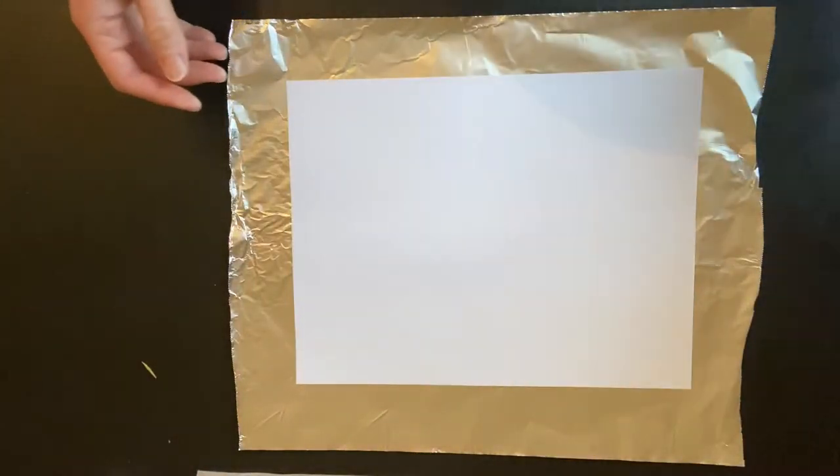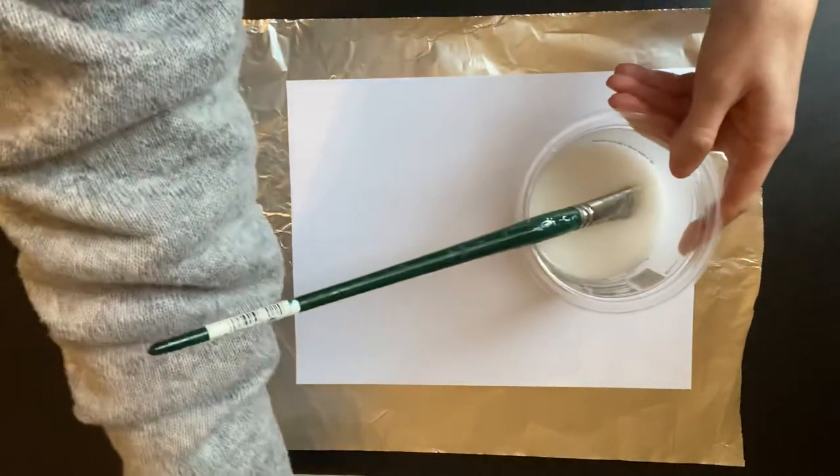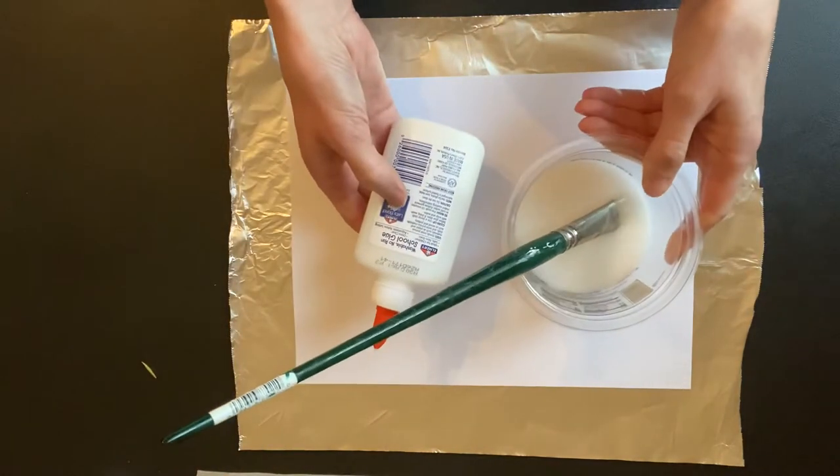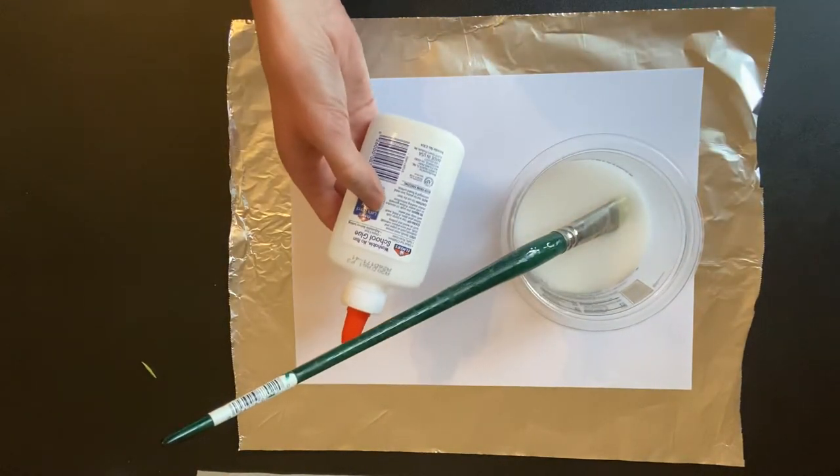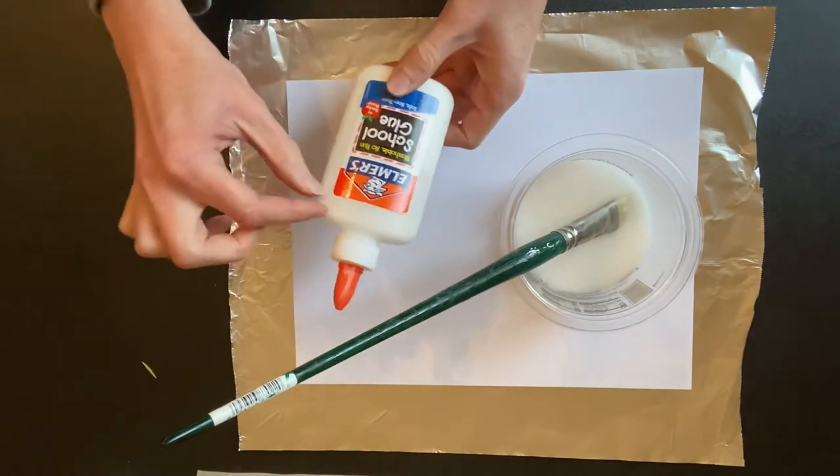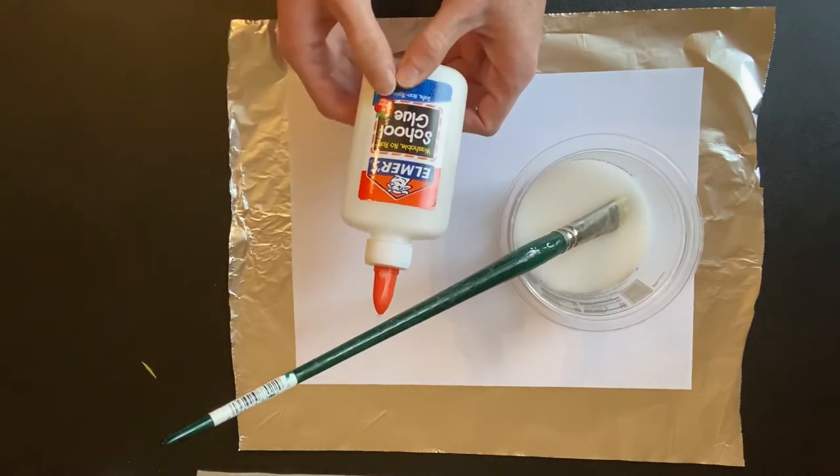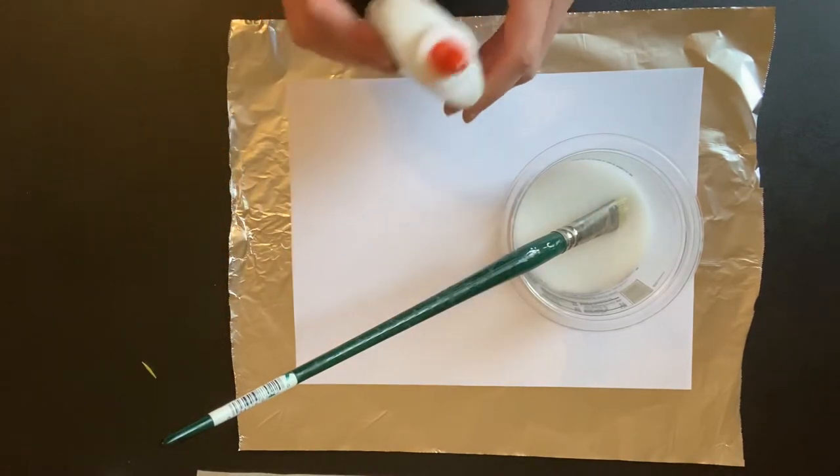So the things you're going to need is regular school glue. You probably brought it home in the last couple of weeks from your school. And you don't need a lot. If I had to guess how much you'd need from the bottle, it'd be that much, which is basically about two tablespoons maybe.